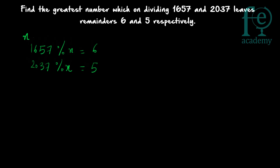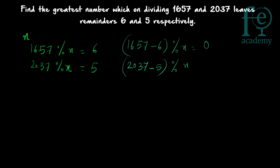When 1657 mod x = 6, it means that (1657 − 6) mod x = 0. And since 2037 mod x = 5, it means that (2037 − 5) mod x = 0.